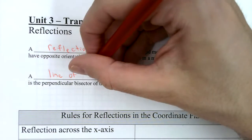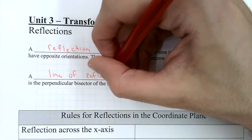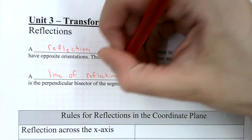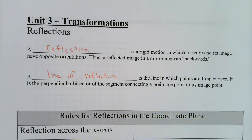A line of reflection is the line over which the points are flipped. It is the perpendicular bisector of the segment connecting a pre-image point to its image point. That's called a line of reflection.